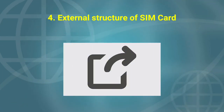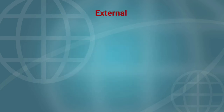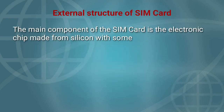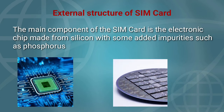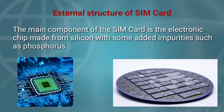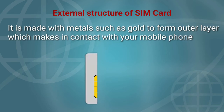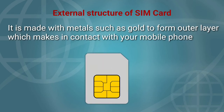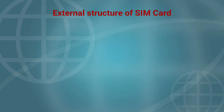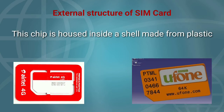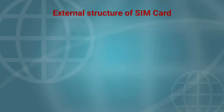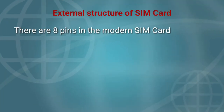External structure of SIM card. The main component of the SIM card is the electronic chip made from silicon with some added impurities such as phosphorus. The outer strip is made with metals such as gold to form the outer layer, which makes contact with your mobile phone. This chip is housed inside a shell made from plastic. There are eight pins in the modern SIM card, and each pin has its own importance.